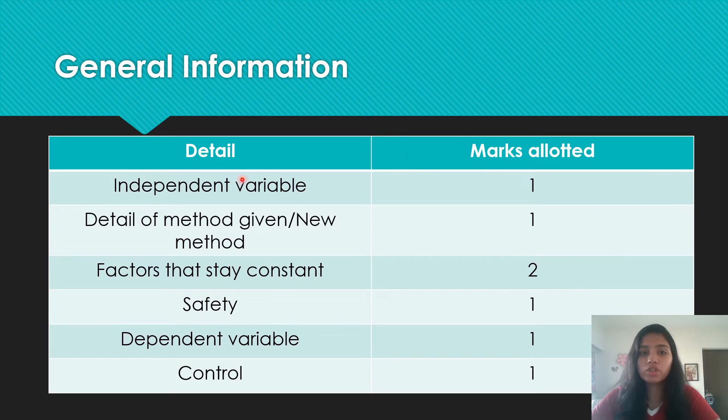So this is general information about which details give you how many marks. Stating the independent variable in your answer gives you one mark. If you give a detail of the method that you're going to use, or the way you're going to modify the method, or if you're going to give your own new method, all of these account for only one mark. Factors that stay constant, your control variables, two marks you get. So even if you state five, you will get only two marks. Safety precaution, you get one mark. Dependent variable, one mark. Control, one mark.